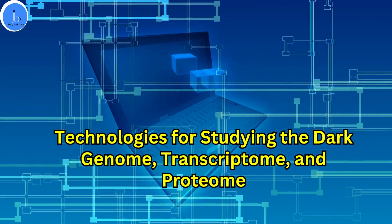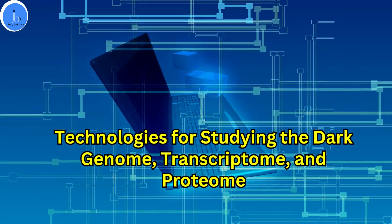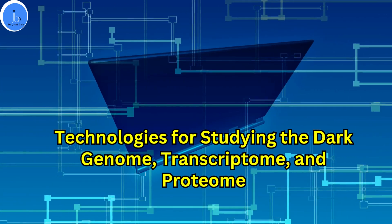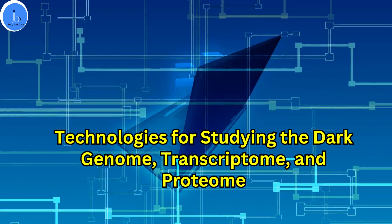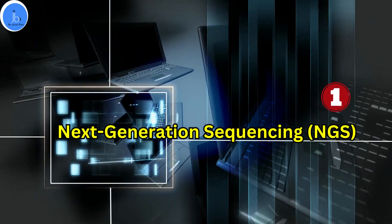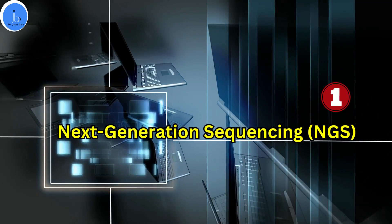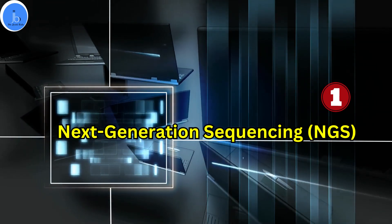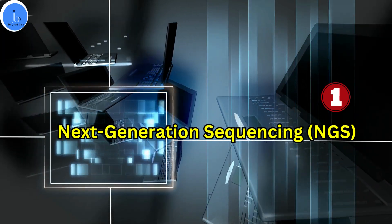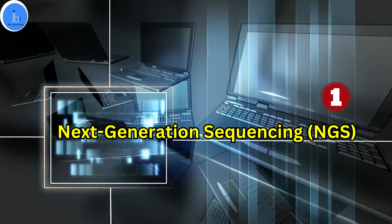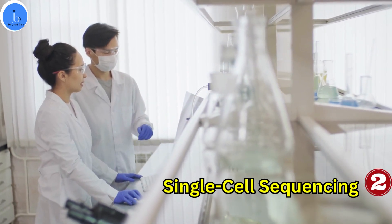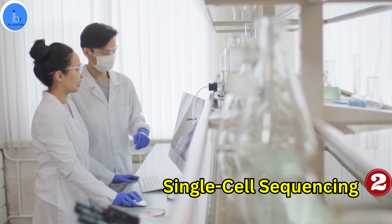Let's look at the technologies that are helping us study the dark genome, transcriptome, and proteome. One significant technology is next generation sequencing — NGS. NGS technology enables high-throughput sequencing of DNA and RNA, allowing researchers to analyze the entire genome, transcriptome, or proteome across various tissues and conditions. Another technology is single-cell sequencing, which provides a detailed view of gene expression patterns at the single-cell level.